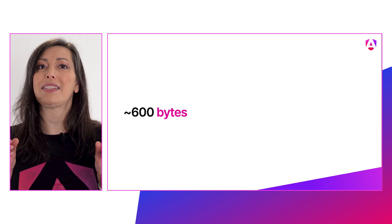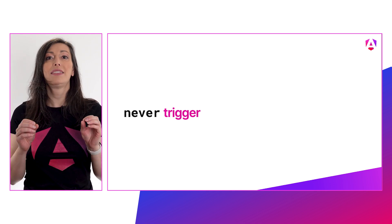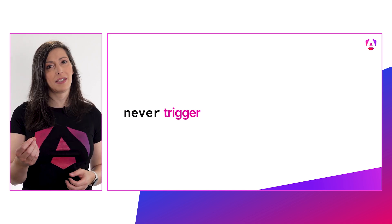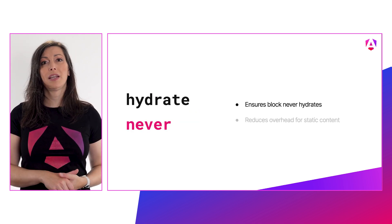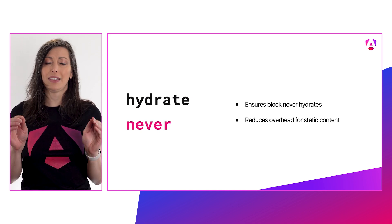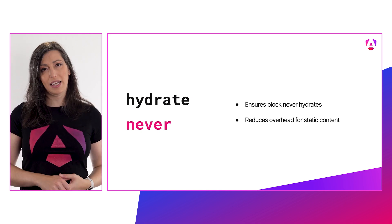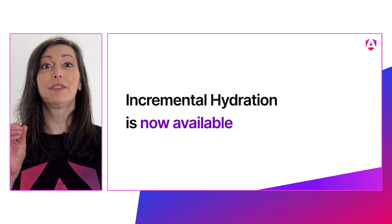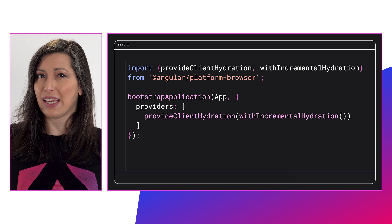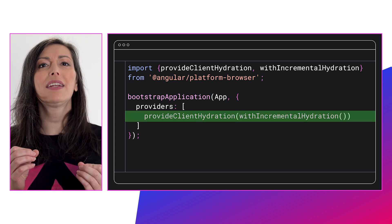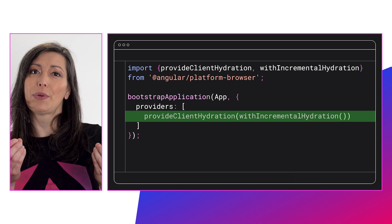So your users won't even know it's there doing this magic for them. Earlier I mentioned the new trigger: never. There may be cases where you have content that doesn't need to be hydrated, like static content from a blog or something similar. `hydrate never` is the solution for that — it ensures that the content inside that block never triggers hydration and because of that never needs to ship any JavaScript on the initial load. This is an awesome option that gives you a great new way to reduce the overhead of static content in your apps. Incremental hydration is now available as a developer preview in Angular v19. To start using it, just add `withIncrementalHydration` to your `provideClientHydration` call, and then you can start adding hydrate triggers to your application's defer blocks.